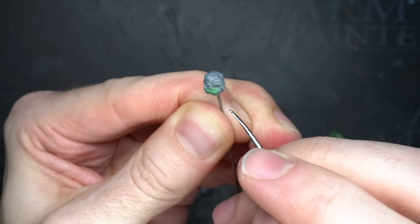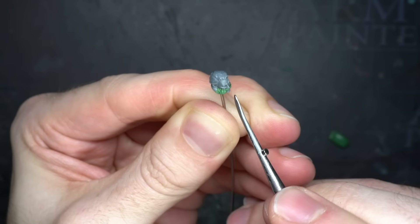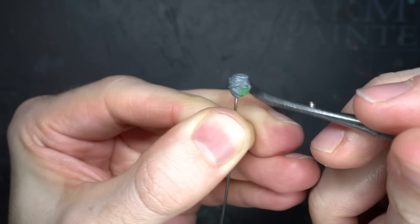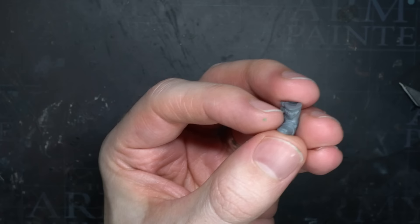With a sharp pointed sculpting tool, I then began to add some fine lines into the putty. I drew these from top to bottom, leaving narrow furrows behind and simulating the appearance of hair. Once again, I made sure to use Vaseline to prevent the putty from being pulled away from the face. With the mutton chop beard completed, I just needed to leave it to one side and wait for it to cure.